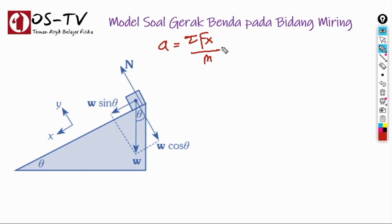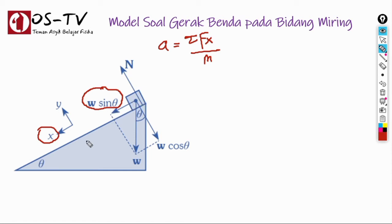Permasalahannya adalah untuk menentukan ΣFx, atau resultan gaya dalam arah sejajar bidang miring, kita perlu melakukan identifikasi gaya-gaya yang bekerja pada benda. Misalnya, kalau dalam gambar diketahui ada nilai gaya W sin θ, yaitu komponen gaya berat benda yang bekerja dalam arah sejajar permukaan bidang miring. Kalau di dalam soal diketahui koefisien gesekan, maka kita juga dapat menentukan gaya gesekan F. Untuk menyelesaikan permasalahan ini, kita memerlukan beberapa langkah, misalnya menentukan terlebih dahulu gaya searah perpindahan yaitu W sin θ, kemudian gaya berlawanan arah yaitu gaya gesekan F, dibagi dengan massa benda M.